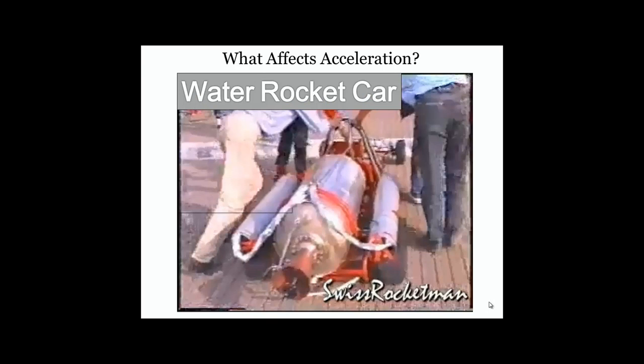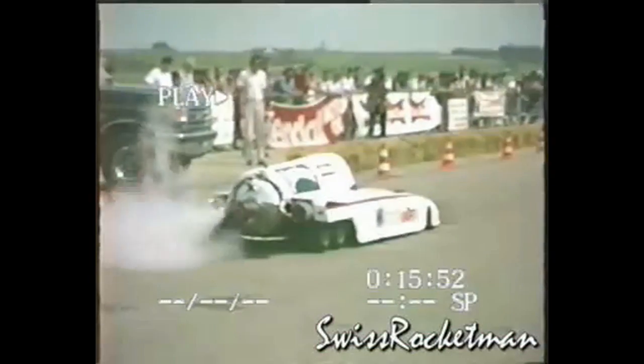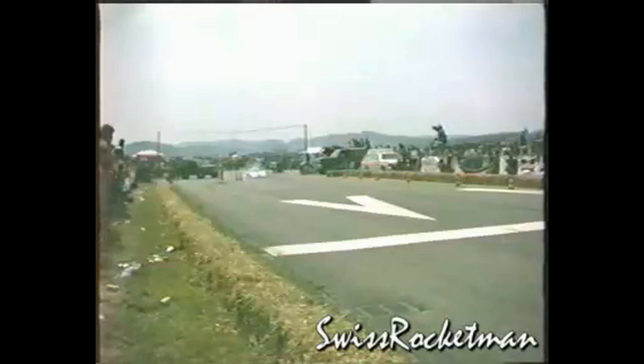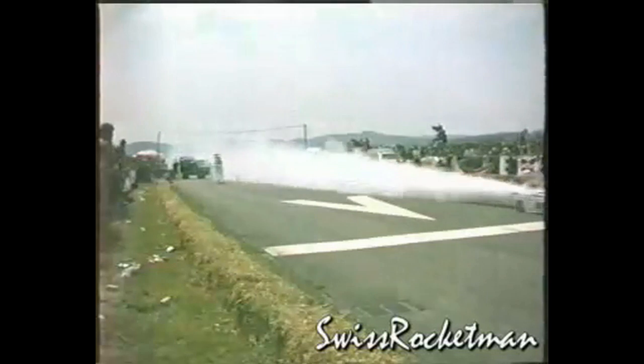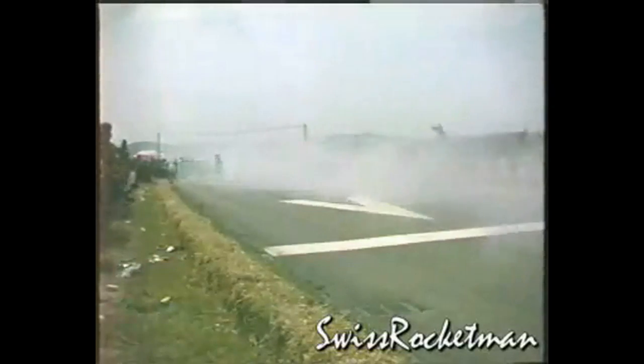To look at and think about what things affect the acceleration of an object, we're going to look at a video of a water rocket car. This car is not much bigger than a long go-kart and that center silver tank in the middle just has a whole lot of pressurized water which gets released out of the back. As that water gets pushed out of the back, it pushes that car forward. The stuff coming out of the back of the car, which looks like smoke, is just water vapor.